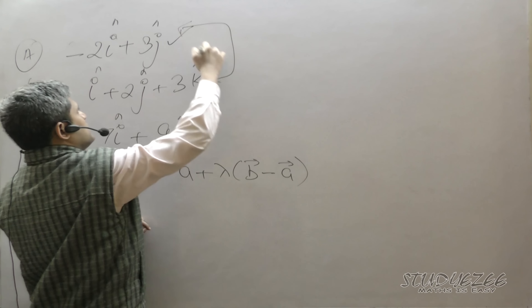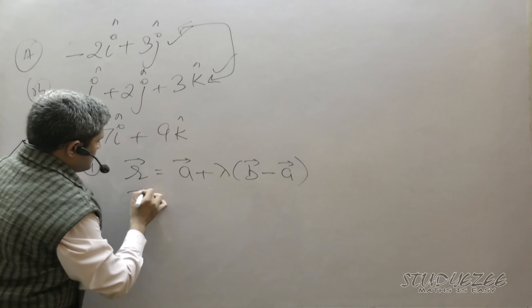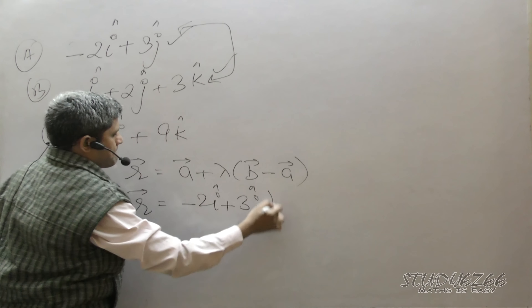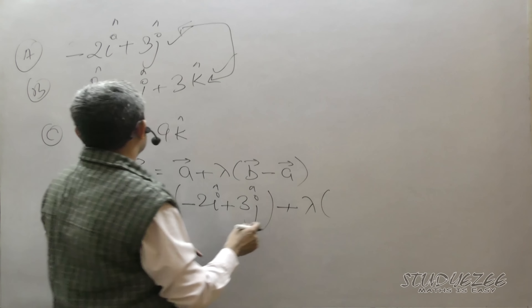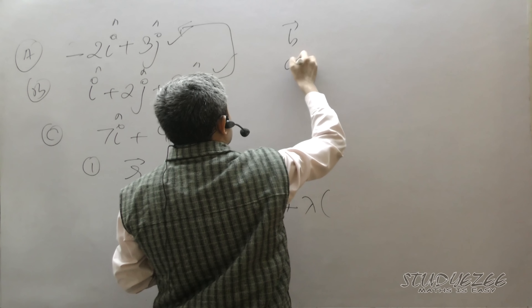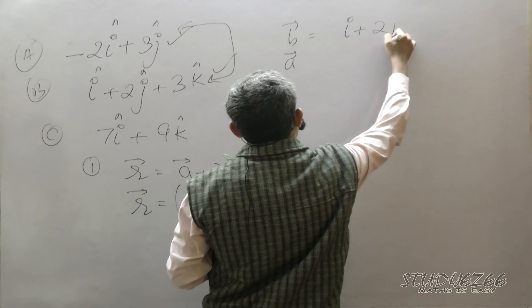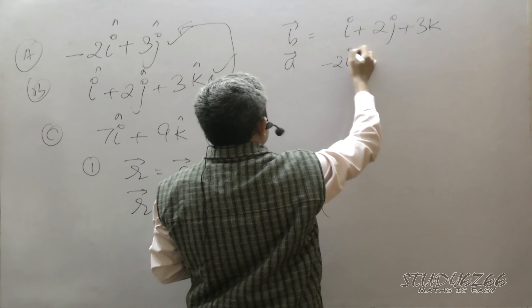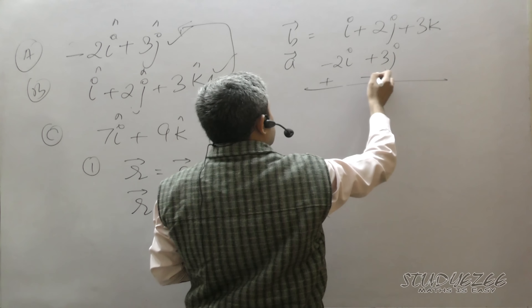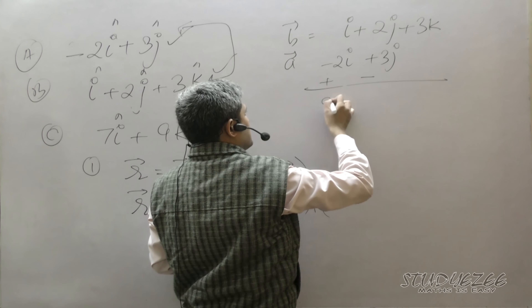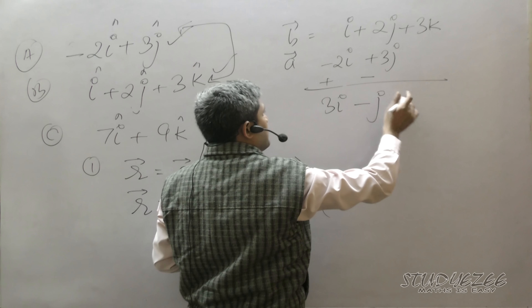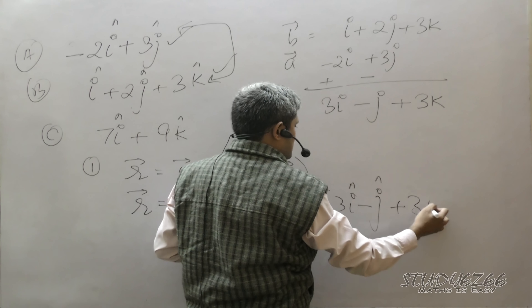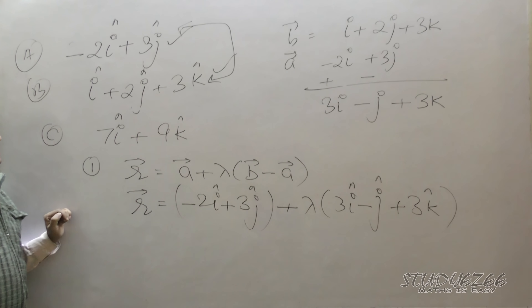If I have two points on a straight line, the equation is r = a + lambda(b − a). I write a as minus 2i plus 3j. Then I calculate b minus a directly: b is i plus 2j plus 3k, and a is minus 2i plus 3j. Subtracting, the signs change accordingly.